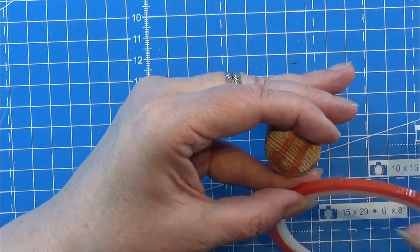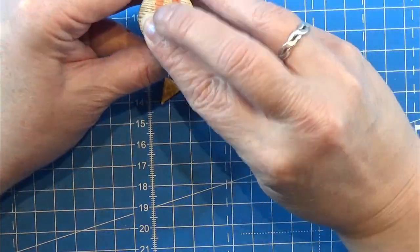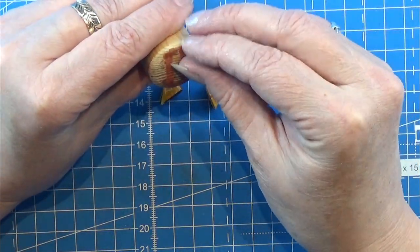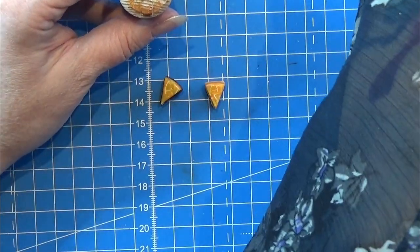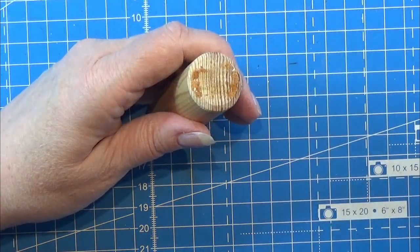Then I am taking a tiny bit of double sided tape and placing that on this little wood stick. I am using that as a handle for when I do the details.